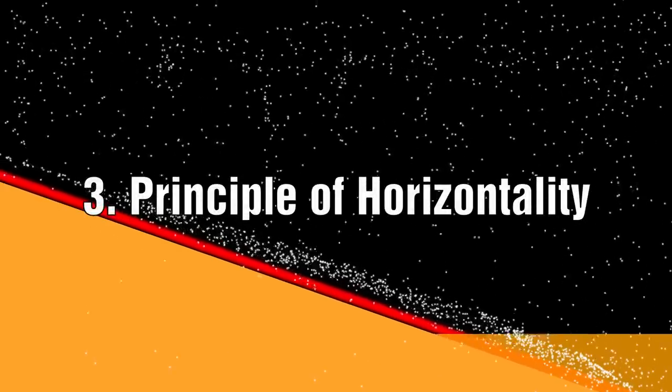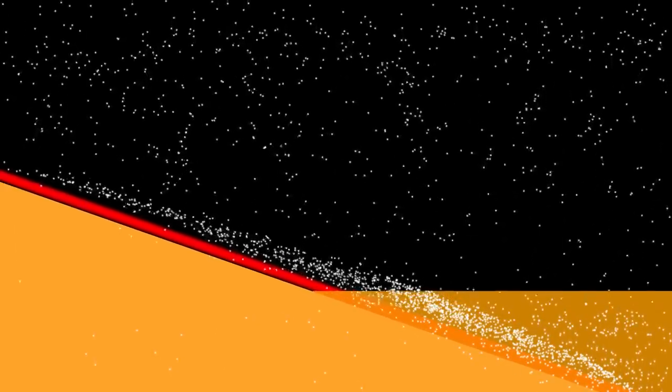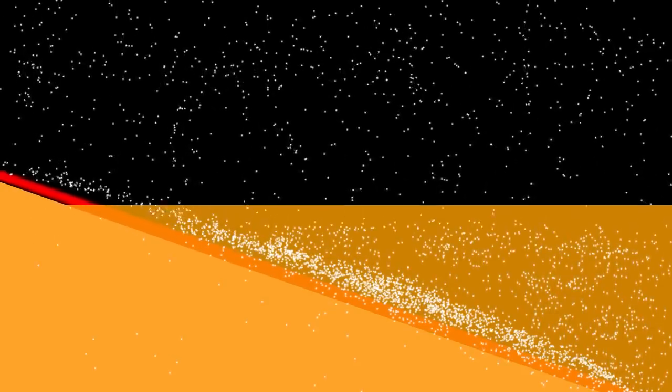The principle of horizontality. At the time when a stratum formed, it would be parallel to the lower surface onto which it was being deposited and its upper surface would be parallel to the horizon.